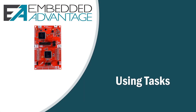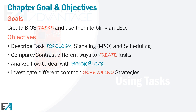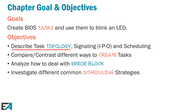Welcome to chapter seven: using tasks. Our basic goal is to learn about tasks and how to create a task, and we're going to use that in the lab to blink an LED. Key objectives include understanding task topology — a task is a function that has a specific topology with a prologue, loop, and epilogue — and we'll discuss those terms.